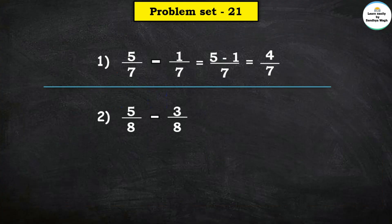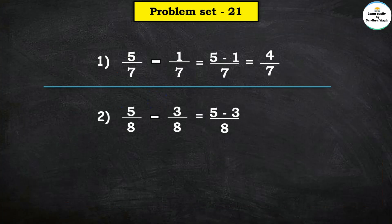Number 2: 5 upon 8 minus 3 upon 8. The common denominator is 8, so let us write 8 in the denominator's place and subtract the numerators. So 5 minus 3 is equal to 2, and the answer is 2 upon 8.